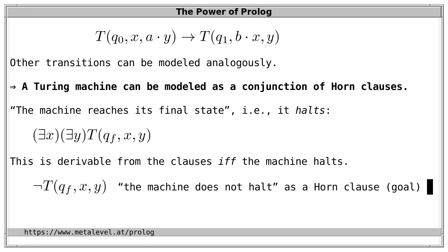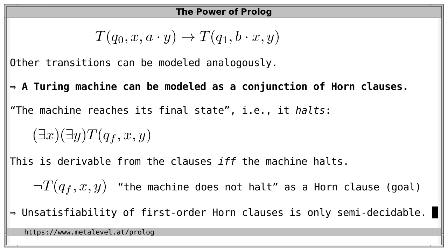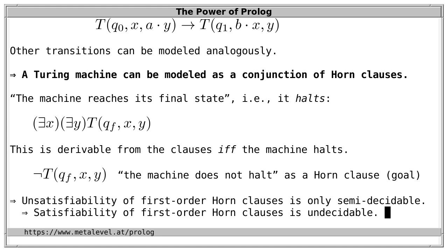Determining whether a Turing machine halts is only semi-decidable, not decidable. From these considerations, unsatisfiability of first-order Horn clauses is also only semi-decidable. If the conjunction is unsatisfiable we can refute it, but every such procedure must either yield wrong results or fail to terminate in some cases if the conjunction is satisfiable — otherwise we could solve the halting problem. As a corollary, satisfiability of first-order Horn clauses is not even semi-decidable — satisfiability is truly undecidable.